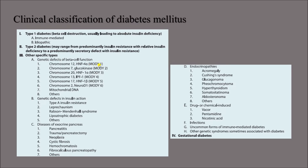Other specific types include MODY — Maturity Onset Diabetes of the Young — types 1 through 6, and other causes such as exocrine pancreas diseases like pancreatitis, pancreatic trauma, pancreatectomy, neoplasia, or cystic fibrosis. Endocrinopathies like acromegaly, Cushing's syndrome, glucagonoma, pheochromocytoma, and hyperthyroidism are also somewhat related to diabetes.